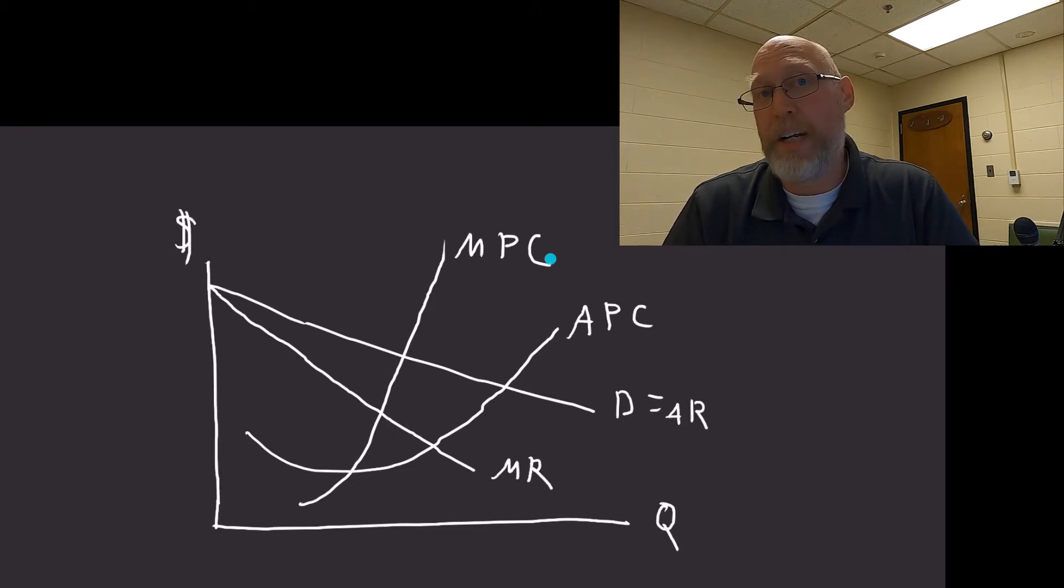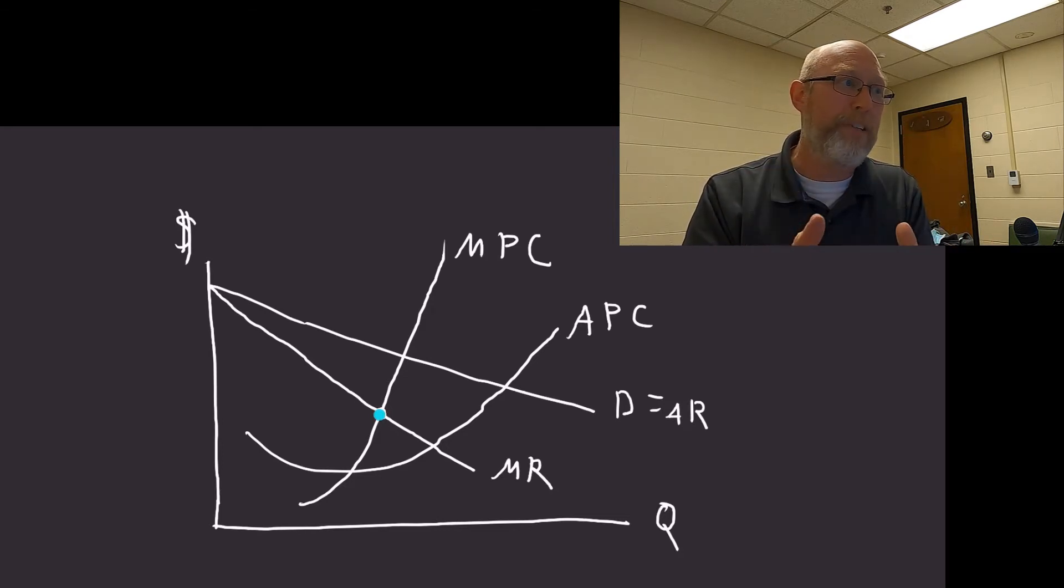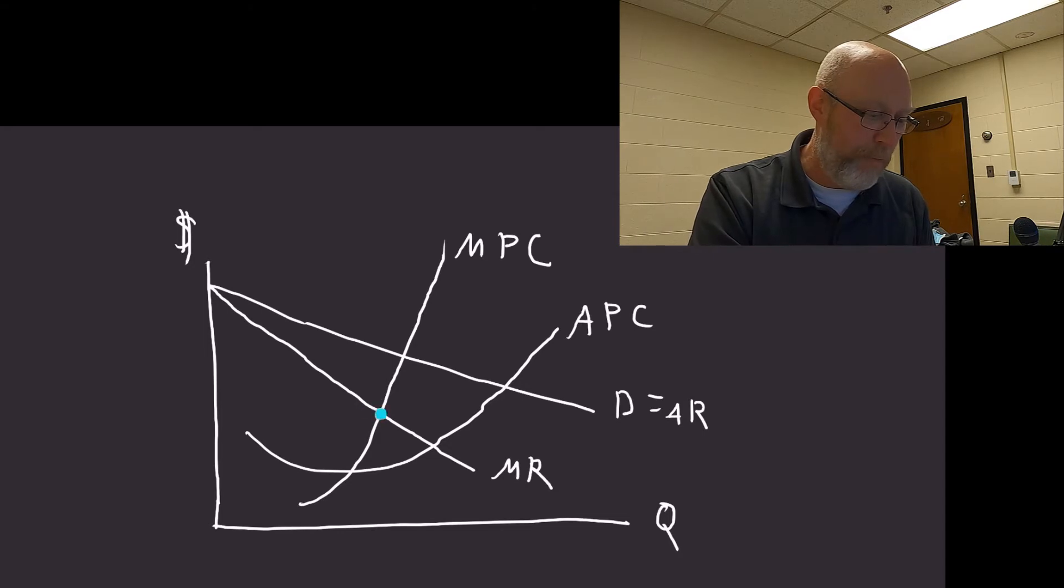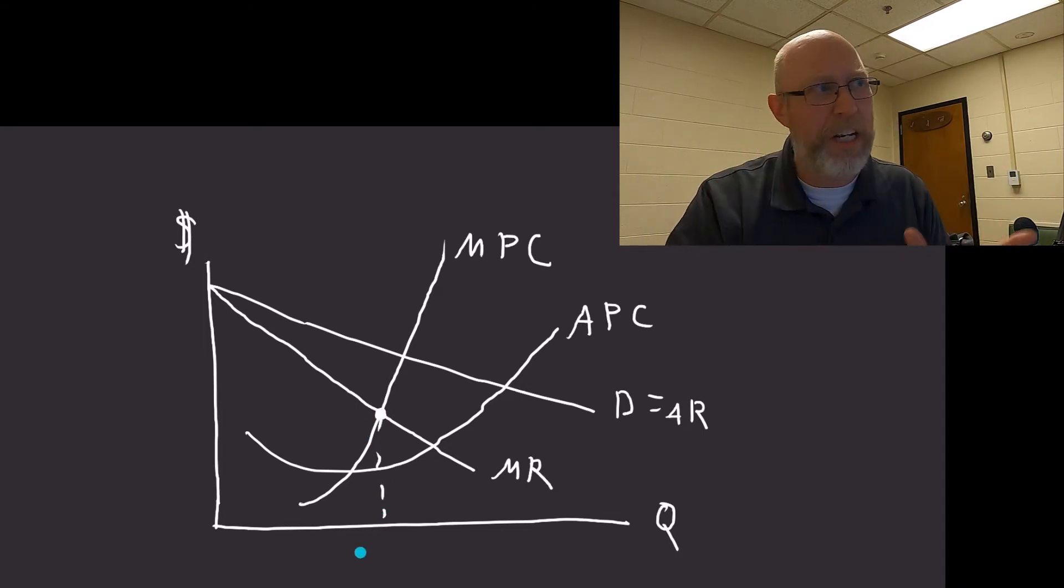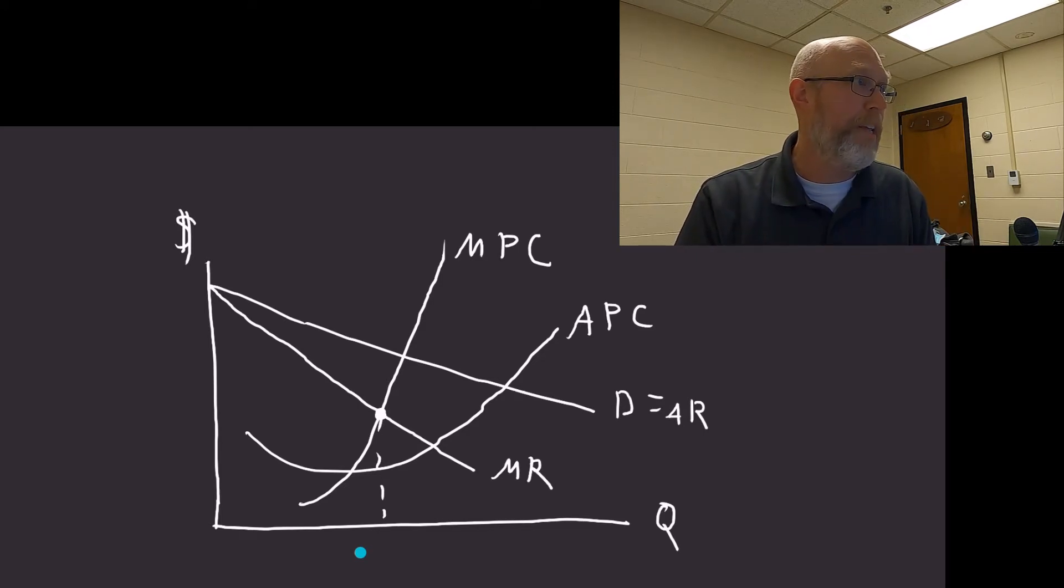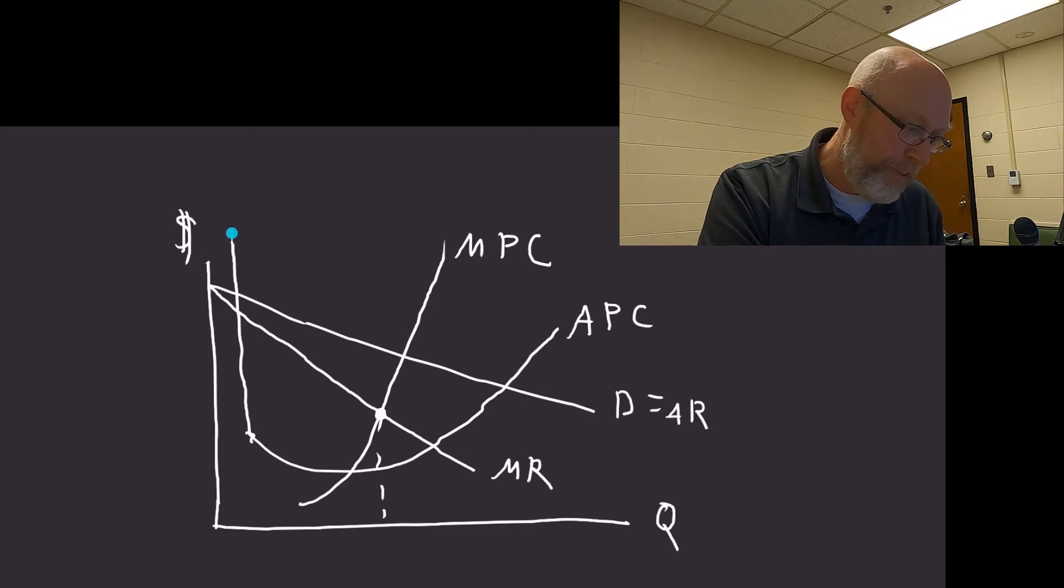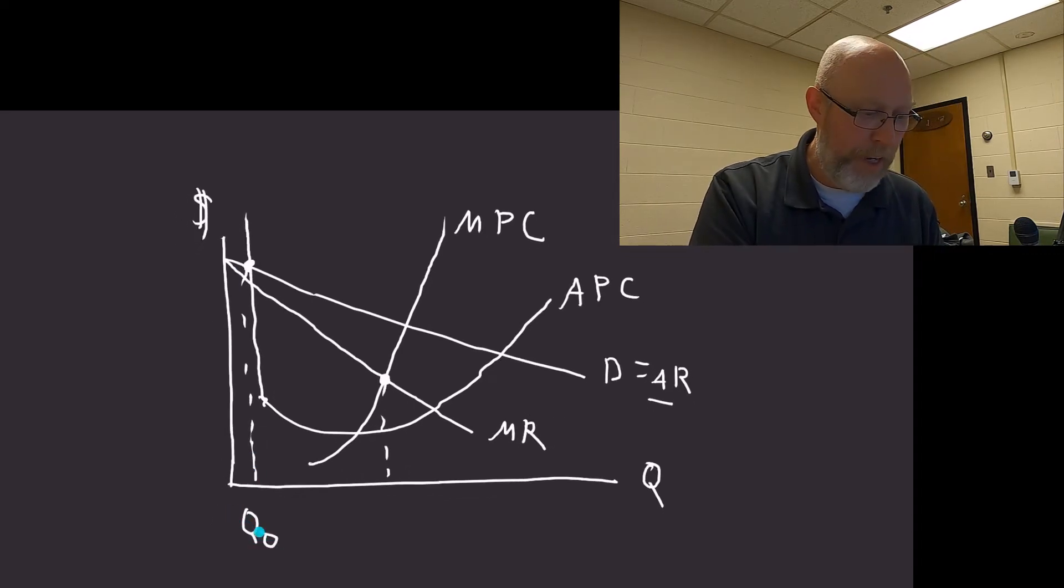The good old fashioned golden rule of profit maximization happens where MR equals MC. This is the point where profit will be maximized. We're going to draw a dotted line down from that point and call that Q-star. The next thing we want to look at is basically two other things. Where the APC crosses the average revenue curve, if we draw a dotted line down, let's call that Q0. At those two points, the cooperative is breaking even.